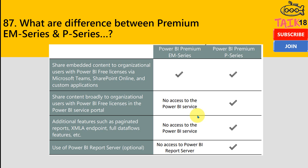That's why it is only possible if you have the P premium license — the P series. Additional features such as paginated reports, XML endpoints, full dataflow features, and the ability to use Power BI Report Server (which is optional) — everything is possible only in the P series.